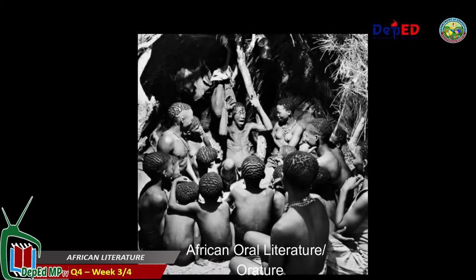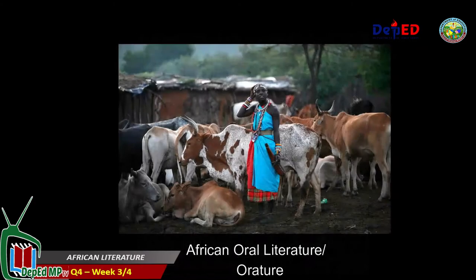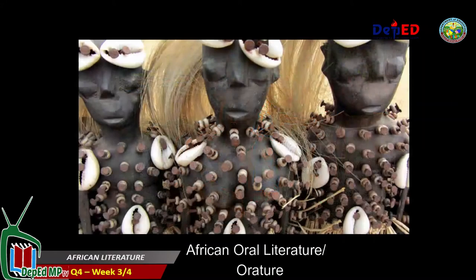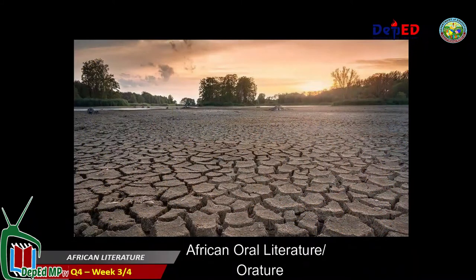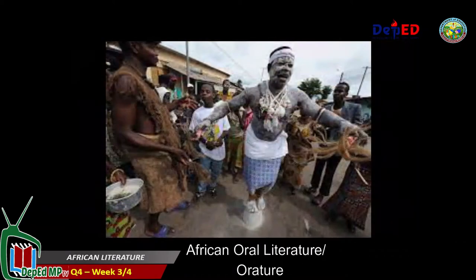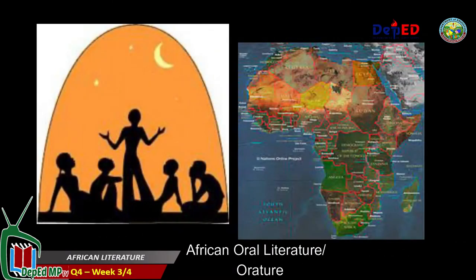The African orature mirrors the people's way of living in their daily experiences such as agriculture and livestock, witchcraft and superstition, nature and climate, hunting, social interaction, and so much more. African orature also carries out African moral values such as those in their trickster tales.